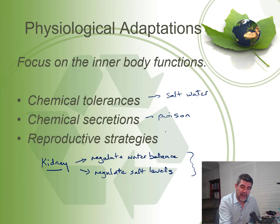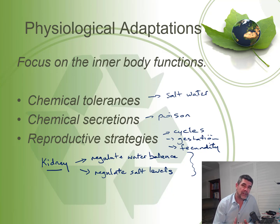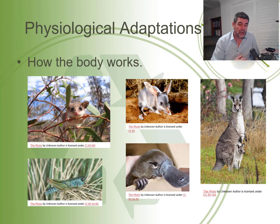Reproductive strategies can include things like different cycles — periods of gestation — or fecundity, the number of eggs that can be produced. All of these are different types of physiological adaptations. Just as we did with structural adaptations, we can look at a number of different organisms and get a sense of some function of the way the body works that helps the organism to survive.